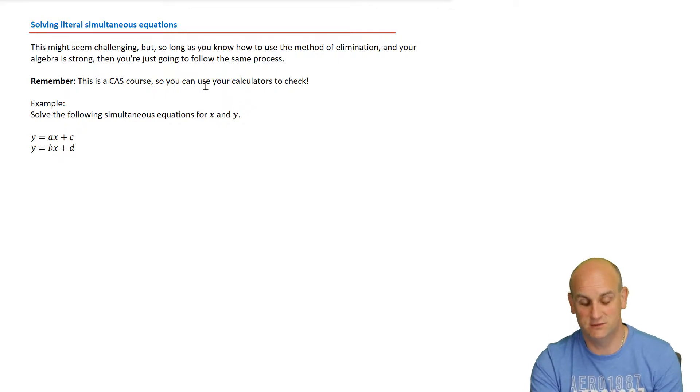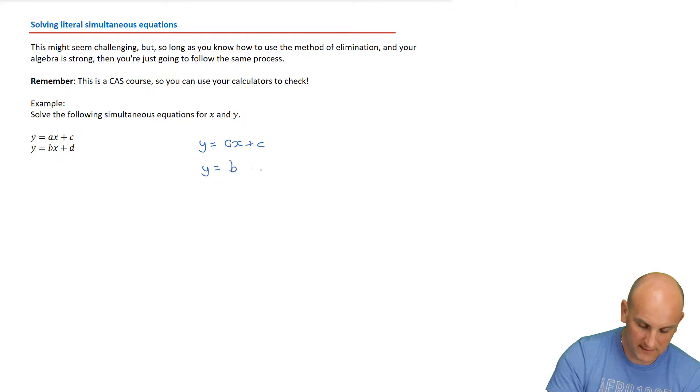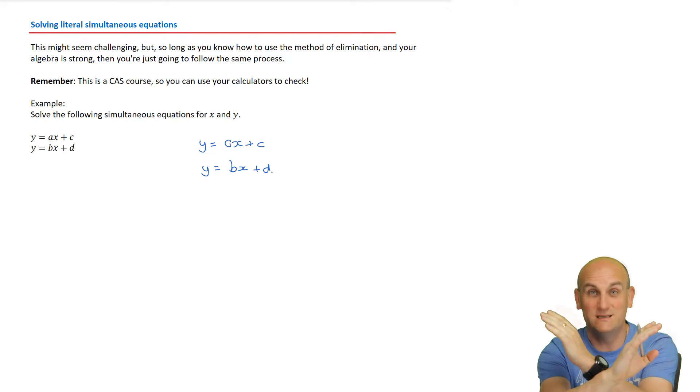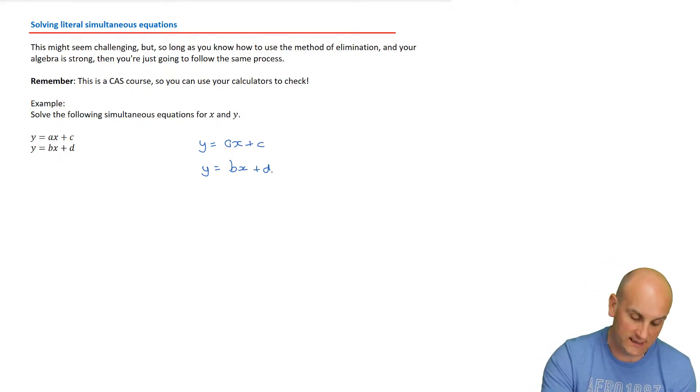In my previous video, I said that we need to remember the process of elimination for simultaneous equations. There will be a link above now that you can click and watch. But otherwise, this is what we need to do. I'm going to solve the following simultaneous linear equations for x and y. Though I've talked about elimination, I can actually do this by substitution. Why? Because I've got y equals ax plus c and y equals bx plus d.